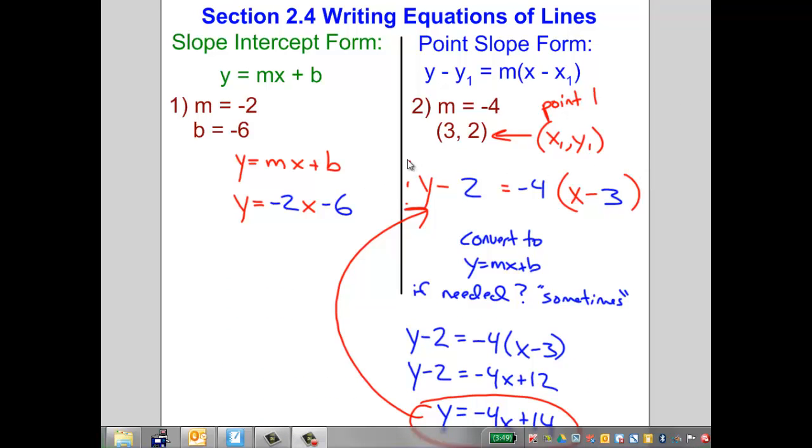Alright, so very simple. If I give you slope-intercept form, I give you the slope, I give you the b, can we solve it? Boom, no problem. Plug in negative 2 for m and negative 6 for b, and there's our equation: y = -2x - 6. Starting point negative 6, slope of negative 2, no problem.